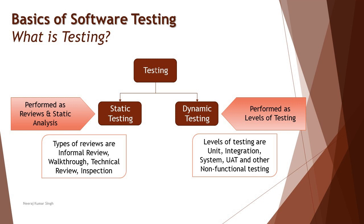All other items — white box testing, black box, functional, non-functional, retesting, regression testing, and many more — are arranged under these two categories. We'll be talking about them in detail in Chapter 2, but right now let's elaborate on what static testing and dynamic testing are.